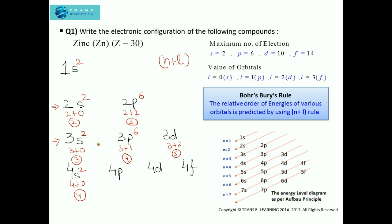Comparing 4p (4+1=5) and 3d (3+2=5): same n+l, but 3d has lower principal quantum number, so we give preference to 3d. It can accommodate a maximum of 10 electrons, so we fill the remaining 10 electrons in 3d. We have written the electronic configuration without remembering the sequence, and we did not need to use 4d or 4f.